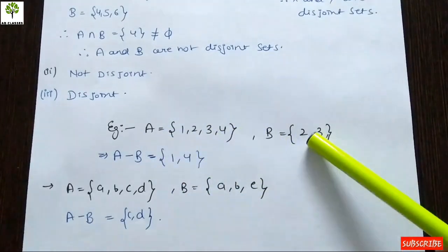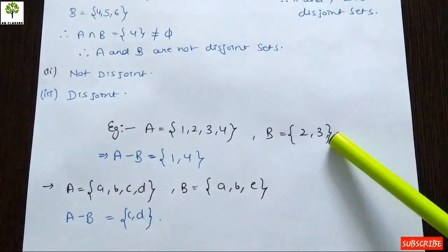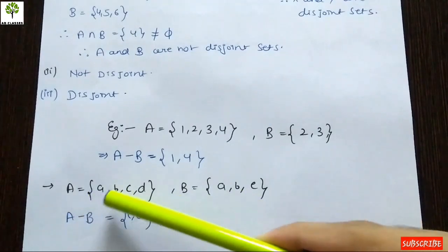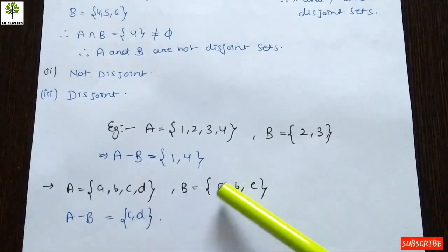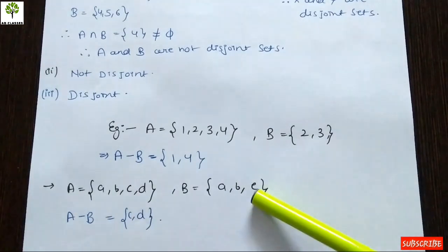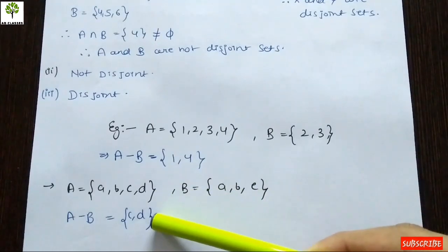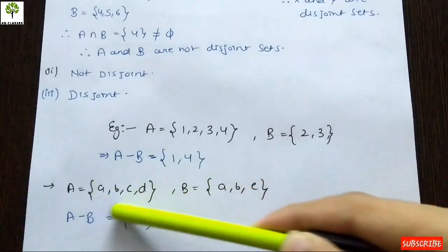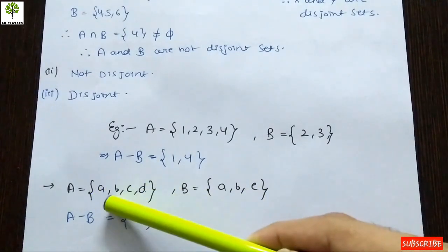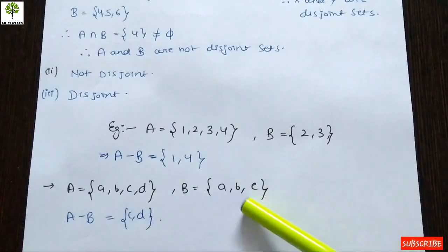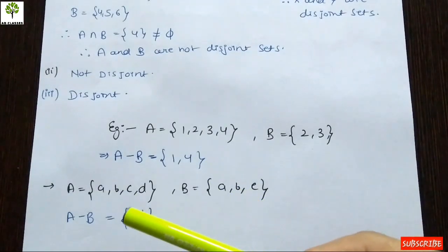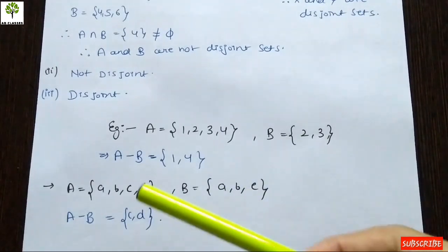Only the elements of set A that are not in B remain in the answer. Any extra elements in B that are not in A are also not written, because the answer must only contain elements from set A. For example, A = {a, b, c, d} and B = {a, b, e}. When we do A minus B, we subtract a and b which are common. E is in B but not in A, so we don't write it. The answer is {c, d}.